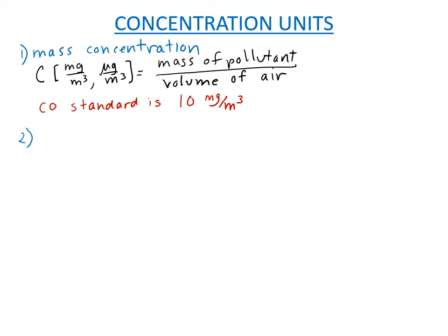The second way that we talk about concentrations in air is the volumetric concentration, sometimes called the mixing ratio, especially by atmospheric scientists. Now, if somebody says the concentration, then it's ambiguous. You don't know whether it's the mass concentration or the volume concentration. You'd have to look at the units or ask.